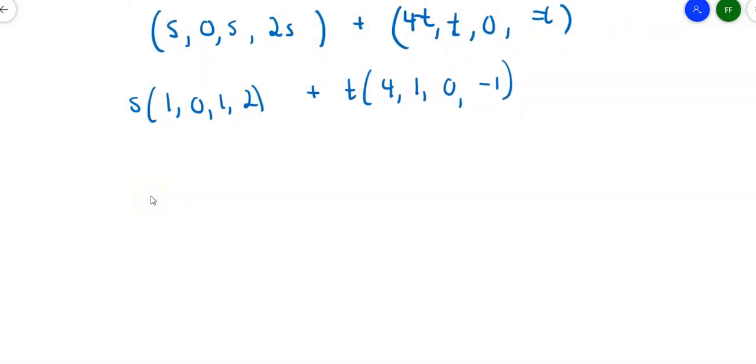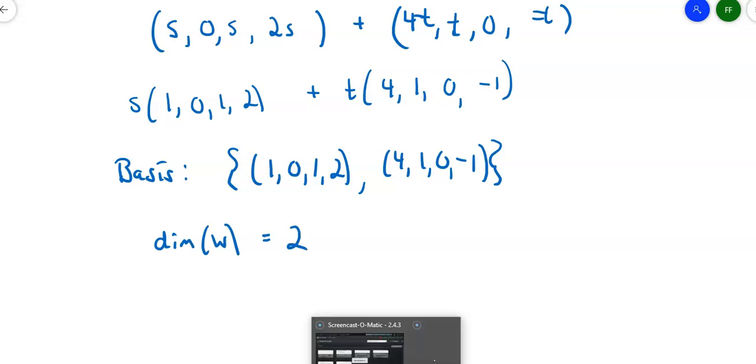So anything in that W set can be written as linear combinations of two vectors. That means that the basis is the set that contains the vectors (1, 0, 1, 2) and (4, 1, 0, -1). How many vectors are in that basis? There should be 2. (1, 0, 1, 2) is one of the vectors and (4, 1, 0, -1) is the other vector, so the dimension is 2.